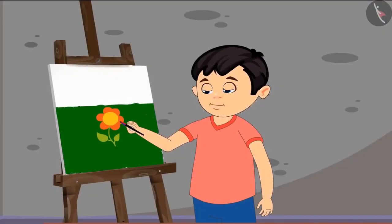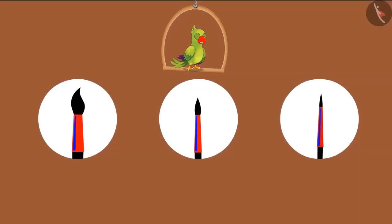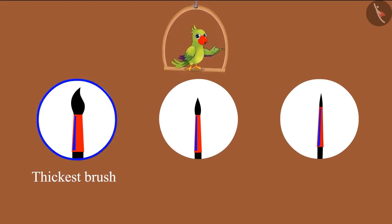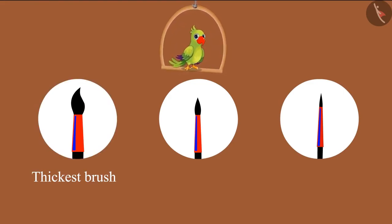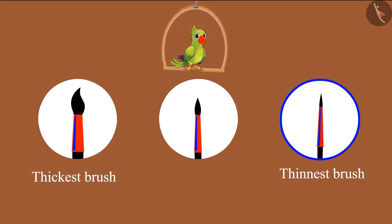Chotto finishes his painting quickly. So children, did you see that Chotto used the thickest brush to paint the green field and the thinnest brush to paint the plant?